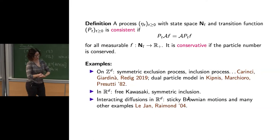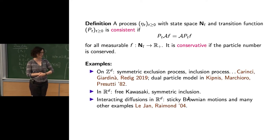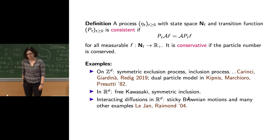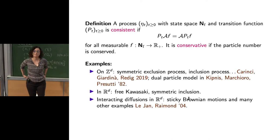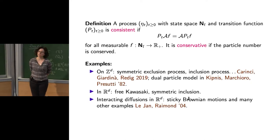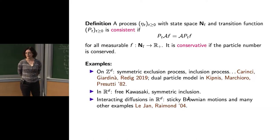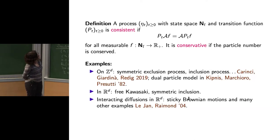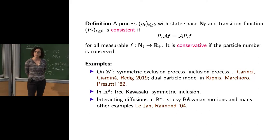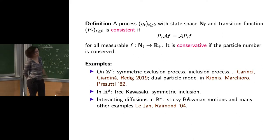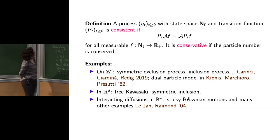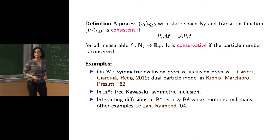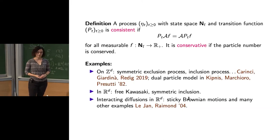This property might sound too restrictive, but many interesting examples satisfy it. On the lattice: symmetric inclusion processes, exclusion processes, the dual particle model to energy transport in Kipnis-Marchioro-Presutti. The two examples I gave also satisfy this. There are also examples in a paper by Le Jan and Raimond — for example, sticky Brownian motions where you have certain interacting diffusions with the interaction tuned a certain way.